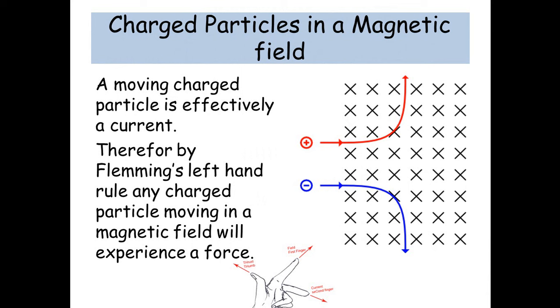A positively charged particle moving towards the field. And the field is going inwards into the screen. The X's that you can see, the rows and rows of X's, that indicates that the magnetic field is going from north to south into the screen that you're looking at right now.